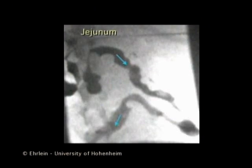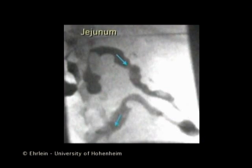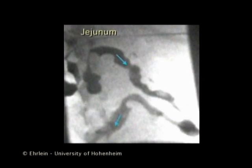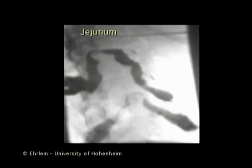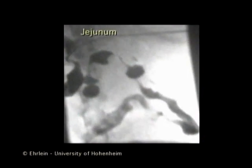This sequence shows segmenting contractions of the jejunum. The arrows indicate the aboral direction of the jejunal loops. Segmenting contractions are characterized by stationary contractions occluding the lumen and occurring irregularly at adjacent sites. They divide the luminal content into segments — it is for this reason that the contractions are designated segmenting contractions.